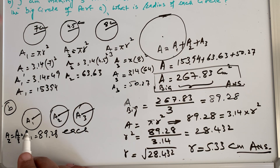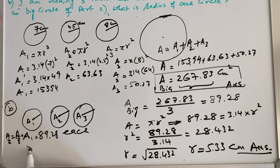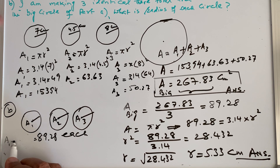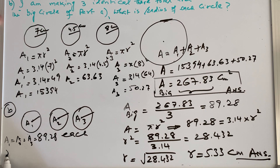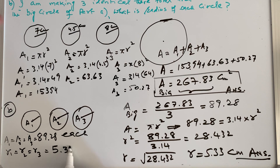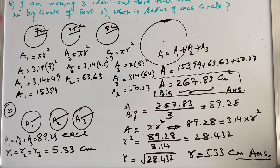Taking the square root gives r equals 5.33 centimeters. The area of each of the three identical circles is 89.28, and since A1 equals A2 equals A3, all radii are equal: r1 equals r2 equals r3 equals 5.33 centimeters. So the radius of each identical circle is 5.33 centimeters.